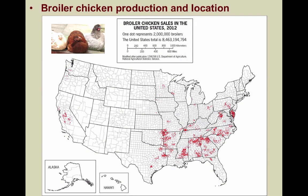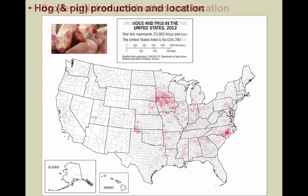Hog and pig production is done in much the same way, as with many other products produced through agribusiness. However, you can see hogs and pigs concentrated in states like Iowa, North Carolina, and Oklahoma. Hopefully now you have a better idea how agribusiness and industrial agriculture operates and dominates modern food production.